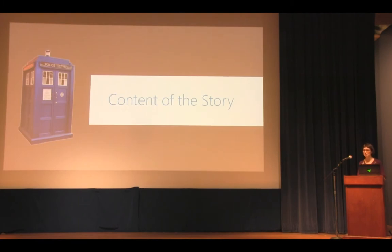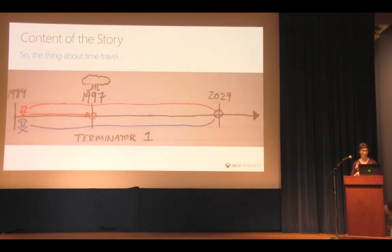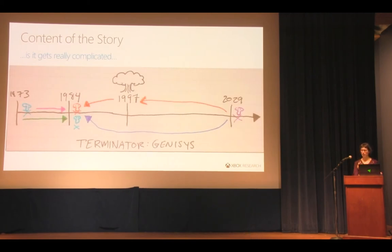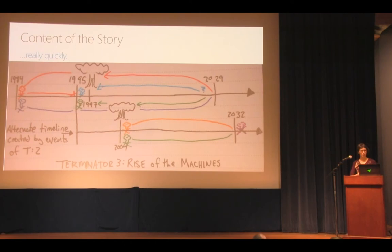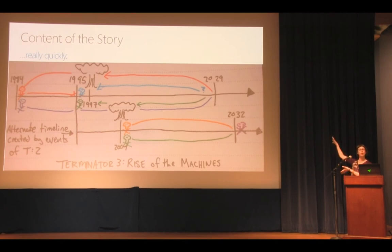The real challenge with the content of the story was that it was about time travel. The thing about time travel is it starts off making a fair bit of sense, then gets more complicated, and by the end you have no idea what's going on — it's really prone to paradoxes. Early in production, everybody on the Microsoft side turned to the narrative designer and asked him to explain the story, and we ended up with a complex graph. It took a full hour for him to explain what was going on with time.